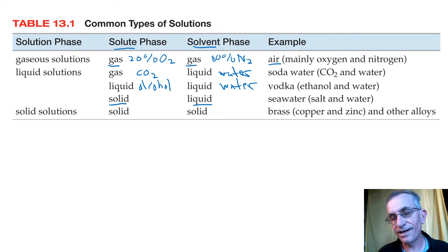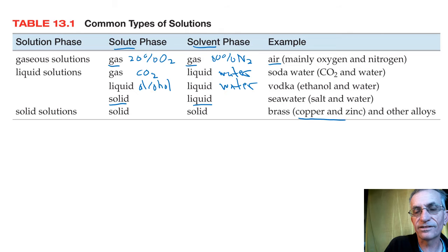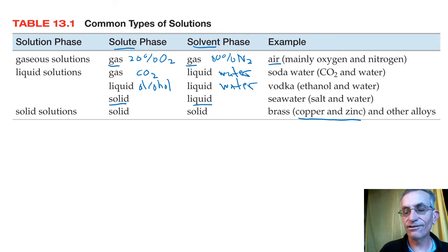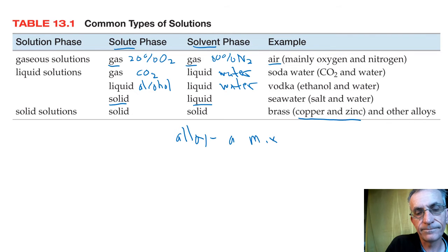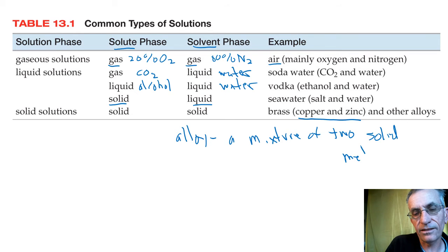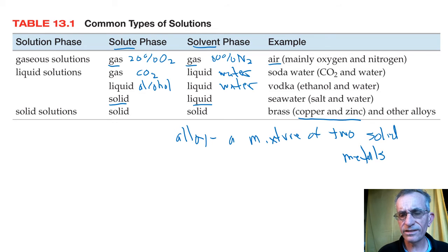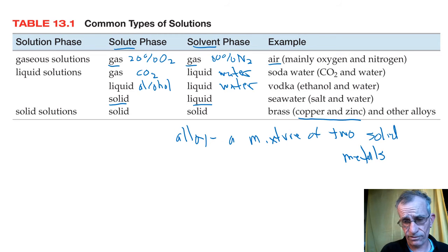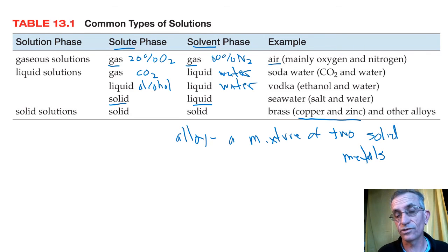It could even be two solids mixed together — that would also be a solution. For example, brass is copper and zinc. When we mix two solid metals together, you'll hear the term alloy. An alloy is just a mixture of two solid metals. So regardless of the combination, the thing you have more of is always the solvent and the thing you have less of is always the solute.